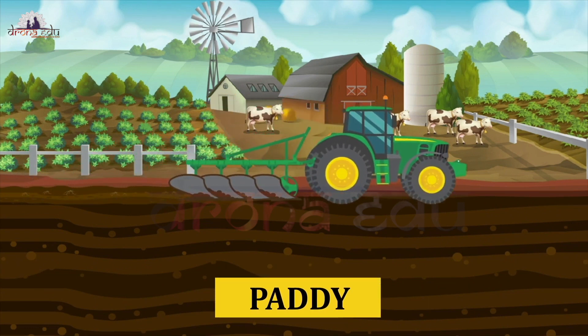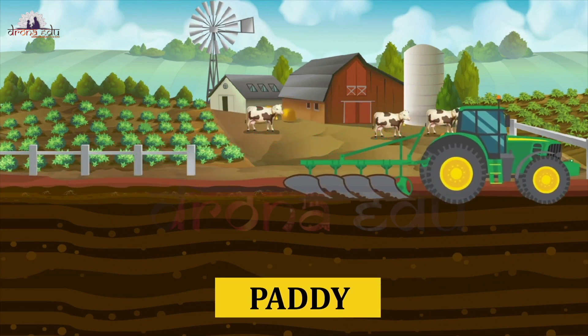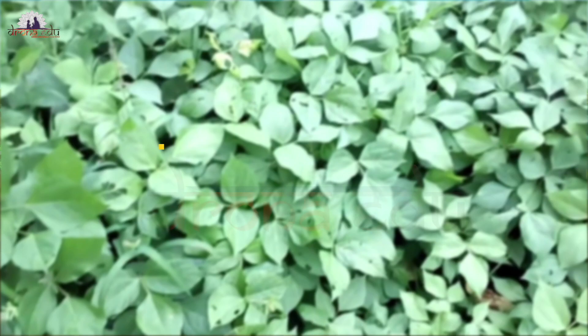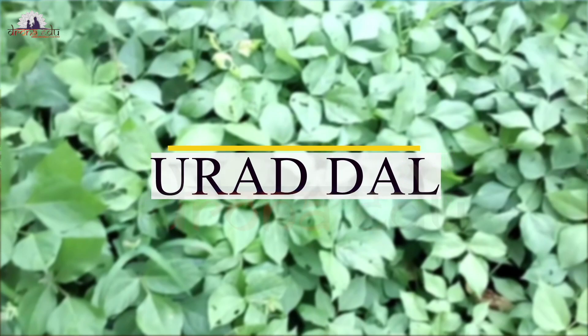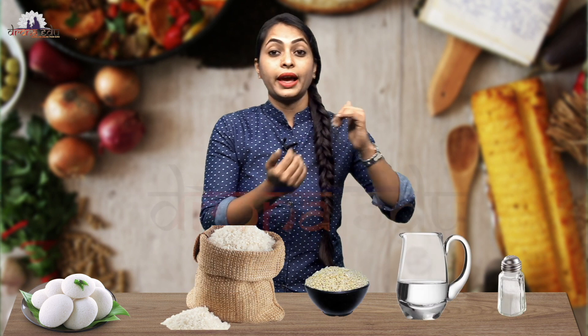From where do we get rice? We get rice from the plant. And urad dal also we get from the plant. Water and salt are added to make idli. So the food is idli, the ingredients are rice, urad dal, salt and water, and the source is plant.